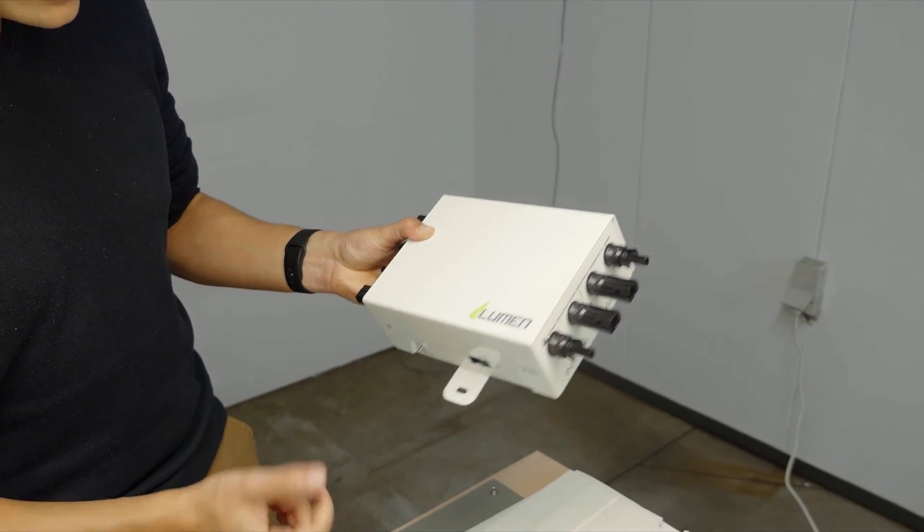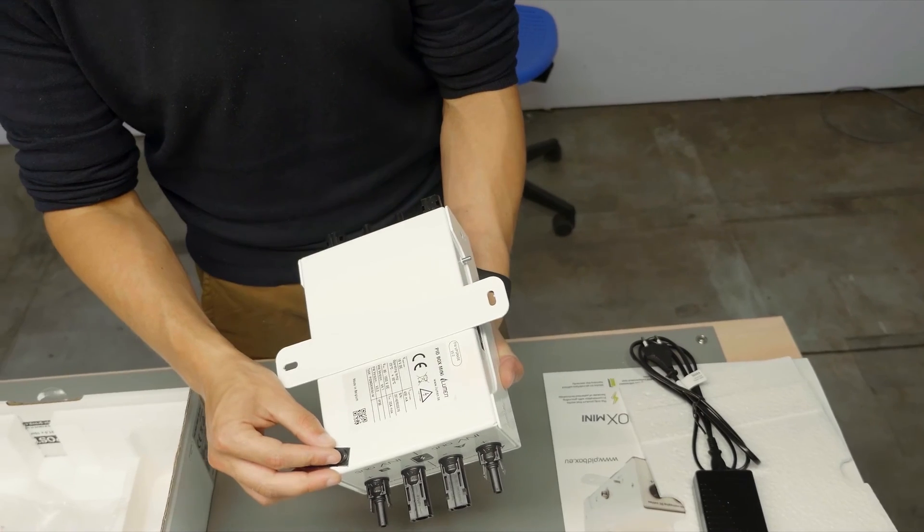There are two ways to mount this device. First, you can screw it to the wall using the holes inside. But if you place it on a flat table, it's not stable. Then you can use these spacers, gluing them to the bottom of the Pitbox Mini to stabilize it.